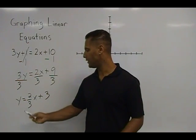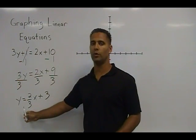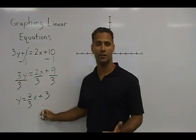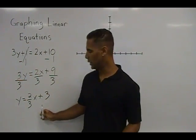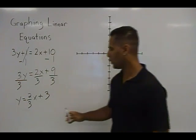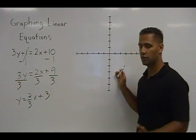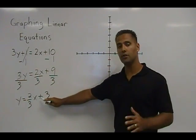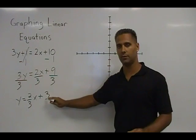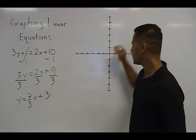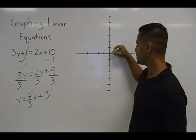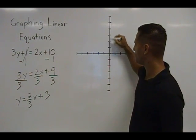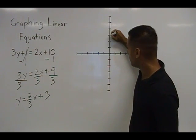This is an equation which is in slope intercept format, so now we can easily graph our equation. Going to our Cartesian coordinate plane, I am going to locate the y intercept first, which is positive 3. So we are going to start from the origin and go up on the y axis 1, 2, 3 and make a point.